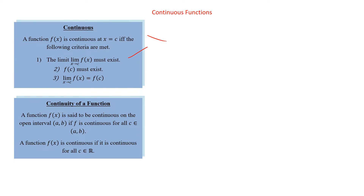Or you could get the function going to infinity or negative infinity — not going to be continuous. If f(c) doesn't exist, that's where you get a hole in the graph — not continuous. That's called a removable discontinuity. So the first type is a jump discontinuity, the second is a removable discontinuity. And then the limit and function value have to equal each other; if they don't, you get a hole but then the point is somewhere else.